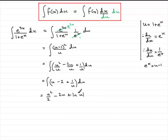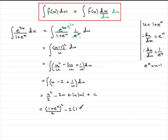Don't forget to add the constant of integration. Now all we've got to do is substitute back for u. Since u equals 1 plus e to the x, we get: 1 plus e to the x all squared over 2, minus 2 times 1 plus e to the x, plus the natural log of the absolute value of 1 plus e to the x. Note that e to the x is always positive, so 1 plus e to the x is always positive — we don't really need the mod signs — plus the constant of integration.